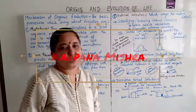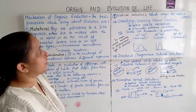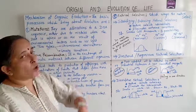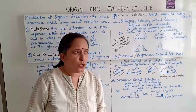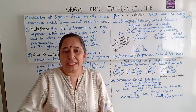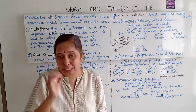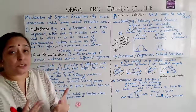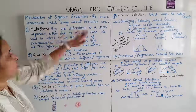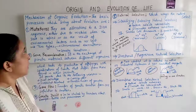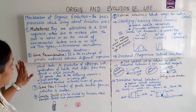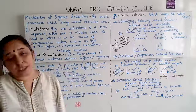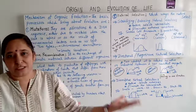Hello my dear students. Today under the chapter 'Origin and Evolution of Life' we will study the mechanism of organic evolution. It is a population that evolves, not its individual members. The basic processes which bring about evolution are: mutation, gene recombination, gene flow, genetic drift, natural selection, isolation, and speciation.